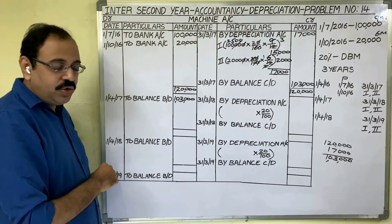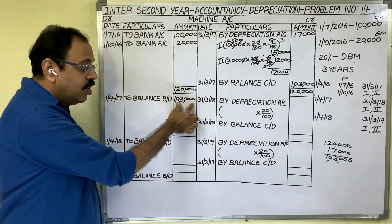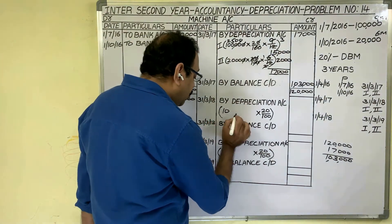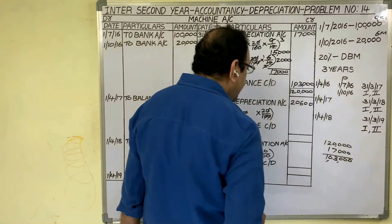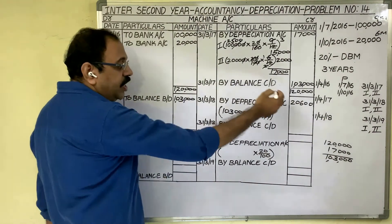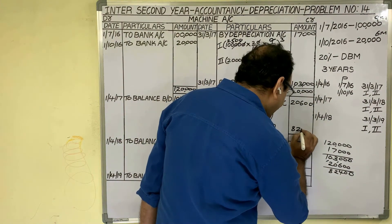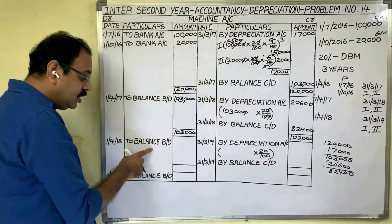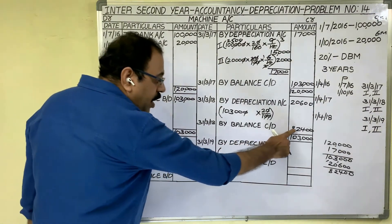This 1 lakh 3 thousand is the opening balance of both assets at the start of the second year. In the second year, both assets are used for 12 months, so we need not calculate depreciation separately — on the total value only, calculate once. On 1 lakh 3 thousand at 20 percent: depreciation is 20,600. Debit total 1 lakh 3 thousand minus 20,600 gives 82,400. Write on credit side: By Balance Carried Down — 82,400. Second year is completed.